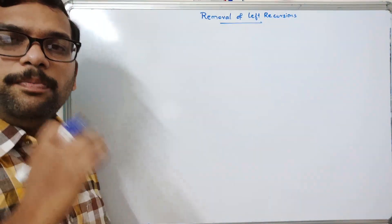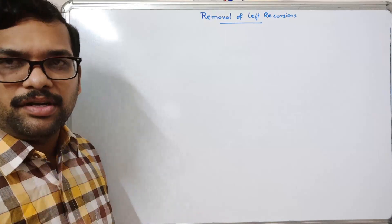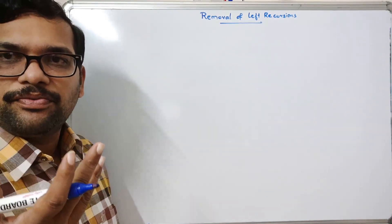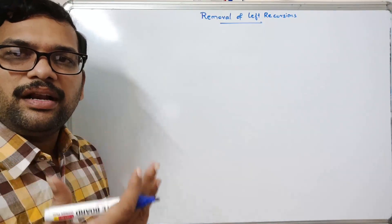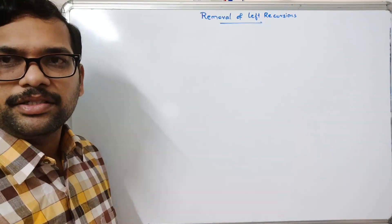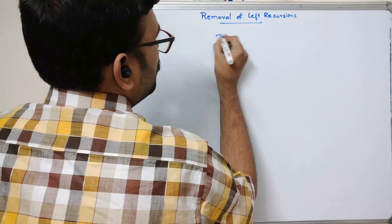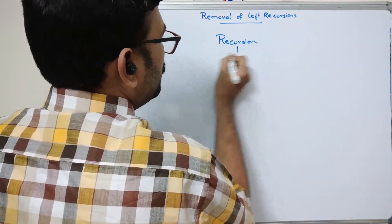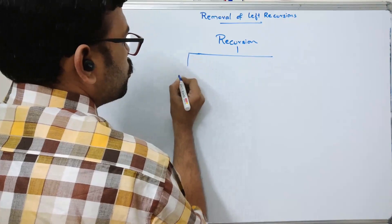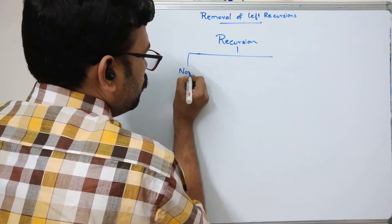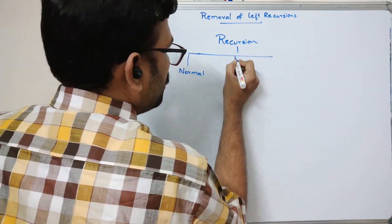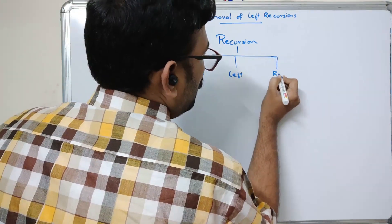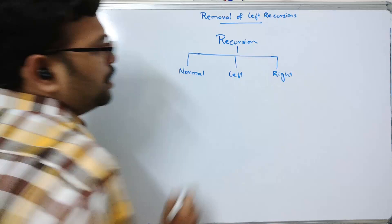Before going to this topic, let us understand what left recursion is. In our productions, there might be a chance of getting three types of recursions: left recursion, right recursion, and normal recursion.